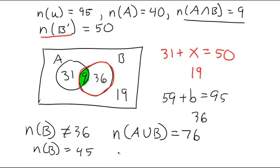Maybe they ask for everything that's not in A, right, A complement. Well if you kind of cover up A and get rid of the 31 and the 9 because those are both in A, then you add up the 36 and the 19 and that's 55 if I do my math right.